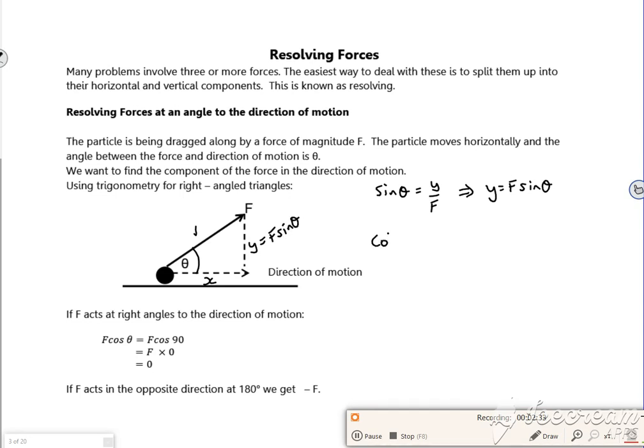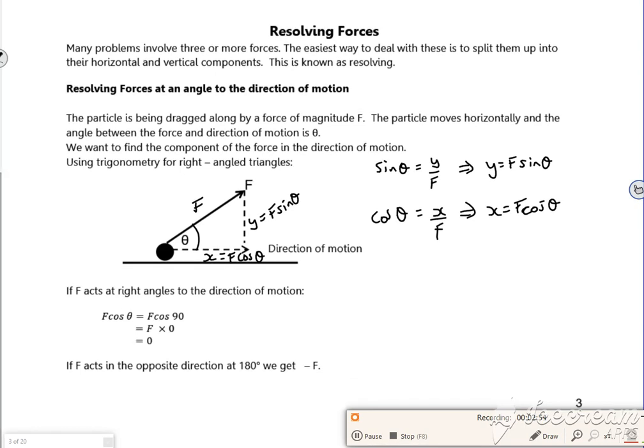If I look at cos theta, that's x over the force. So x is F cos theta. So whatever one is next to the angle is the force times by cos theta. So I just break it up like that. And if you remember, the one next to the angle is cos and the one opposite the angle is sine. Can't go wrong.